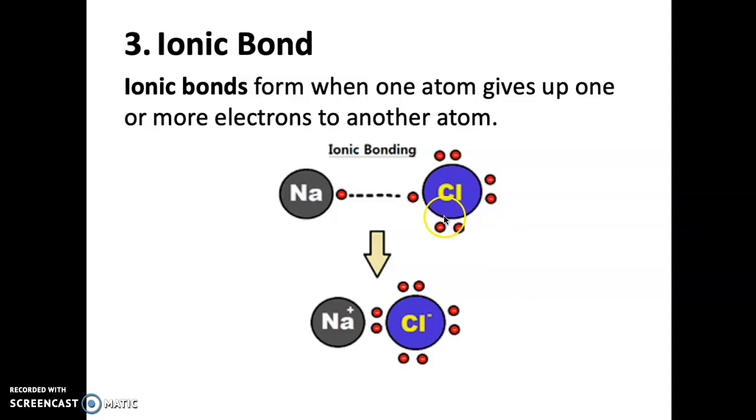So the classic example we always give is table salt, sodium chloride. Sodium chloride here has, in its valence shell, one extra one. Chlorine, in its valence shell, is missing one. So it would be easy for this molecule to just donate this one, have this one be completed, this orbital complete to eight, and this one get rid of that lone electron in that outer orbital that's needing seven more, which is very complicated to get.